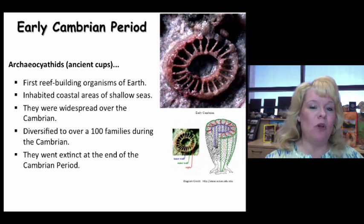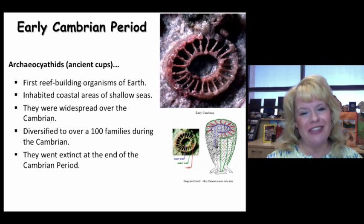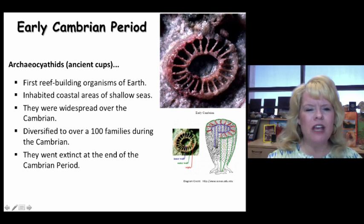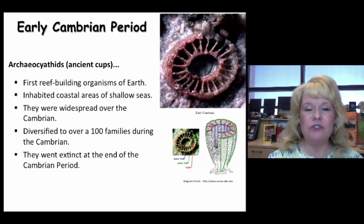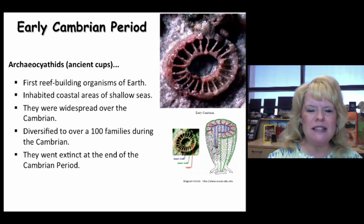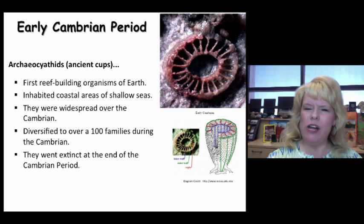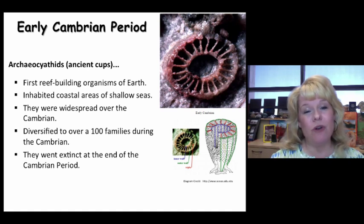Another famous animal — very famous because it made its debut and went fully extinct in the same geologic period. Archaeocythids, sometimes called 'ancient cups,' are kind of related to sponges and inhabited shallow marine coastal environments. Over a hundred families evolved very quickly during the Cambrian. Unfortunately, they didn't do well and went extinct at the end of the Cambrian period, along with most of the trilobites.